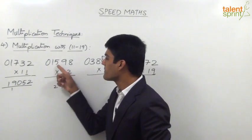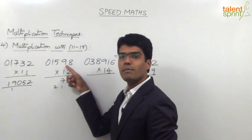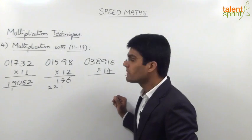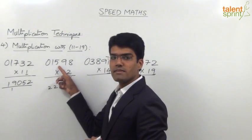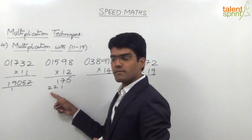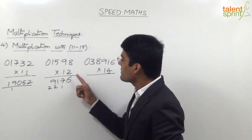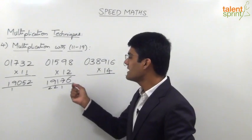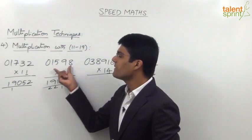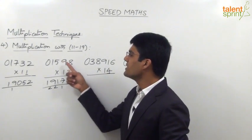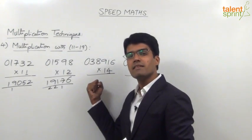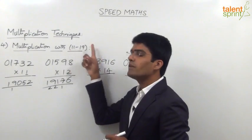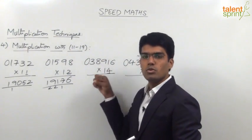The third step: 2 into 5 is 10, plus previous digit 9, is 19, plus carry 2 gives 21. So we take 1 in the answer and 2 goes as carry. Next step: 2 into 1 is 2, plus previous digit 5 is 7, plus carry 2 is 9. So we get 9 in the answer. The last step: 2 into 0 is 0, plus 1 is 1. So the final answer is 19176. Instead of multiplying with 12, we multiply each digit with 2 and add the previous digit — the addition of the previous digit gives us the effective multiplication with the tens place, which is 1.